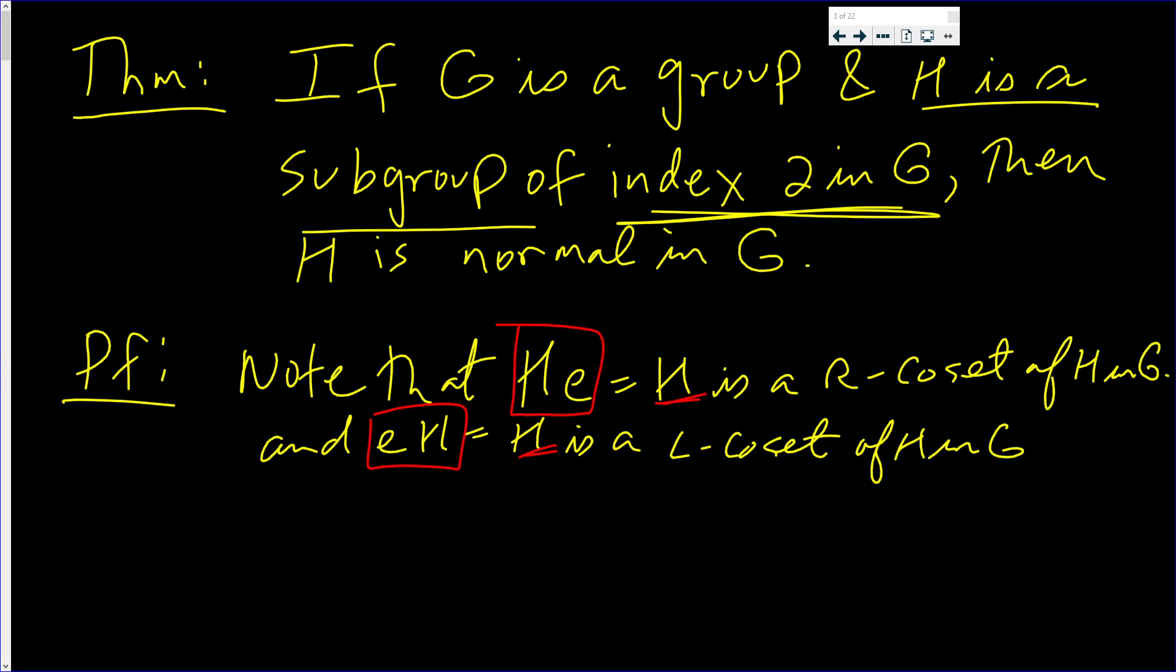Now, to be a normal subgroup, all cosets have to be equal. That is, all the left cosets and all the right cosets have to be equal.